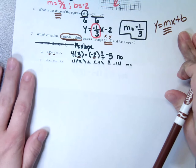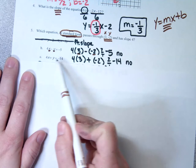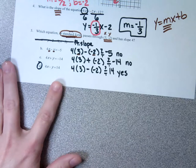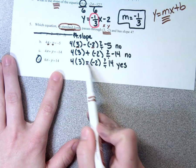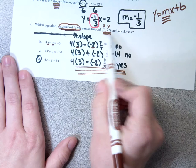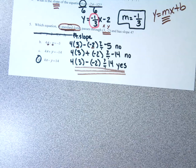I did the same thing with C — I put 3 where X is, negative 2 where Y is, and tried to see if that makes negative 14. It doesn't, so I know the line doesn't go through that point. Then I tried D: I put 3 into X, negative 2 into Y — this makes a plus — and 4 times 3 is 12, and 12 plus 2 is 14. That is correct. So since this is correct, I know this line definitely goes through that point. None of the others went through that point.